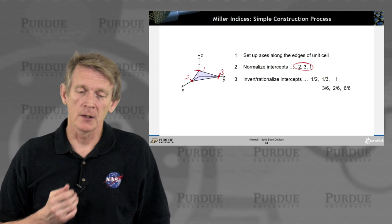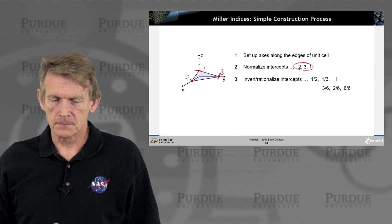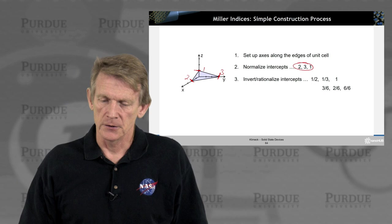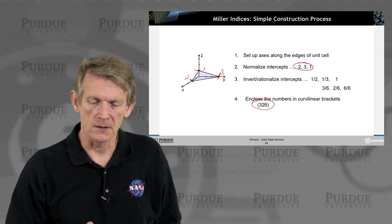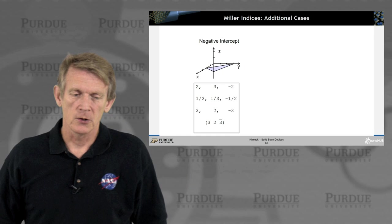So we have these guys here. And now you normalize them or rationalize them. So you divide by the common denominator, which in this case is 6. So you come up with a normalized number that is now 3/6, 2/6, and 6/6. And that surface here would be called a 3, 2, 6 surface.